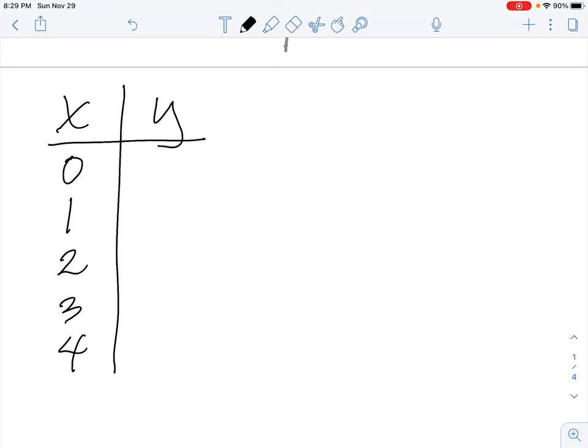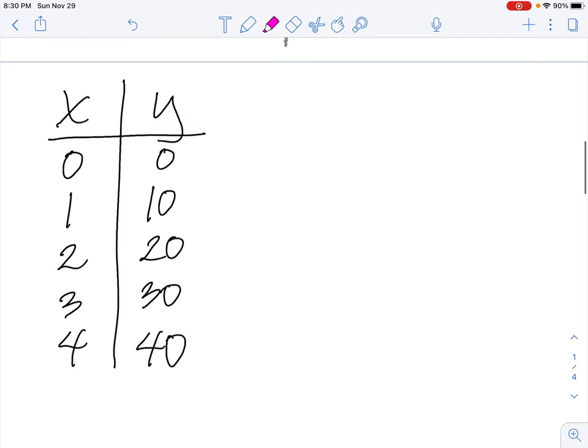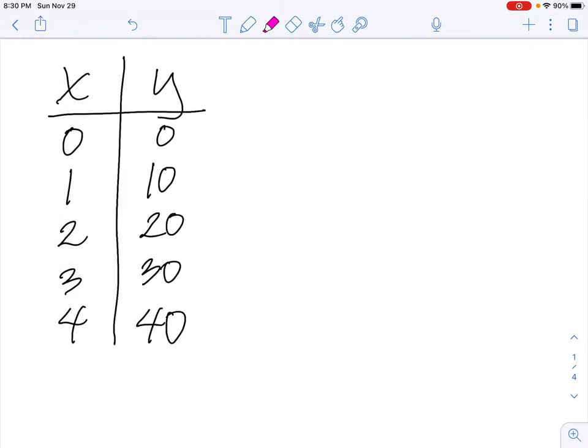Our y values, our outputs, let's say they were this: 0, 10, 20, 30, and 40. So you can see there is a real relationship between x and y here. And the function should be pretty easy to pick out. You take x and multiply it by 10, and you get y. 0 times 10 is 0, 1 times 10 is 10, 2 times 10 is 20, 3 times 10 is 30, 4 times 10 is 40.